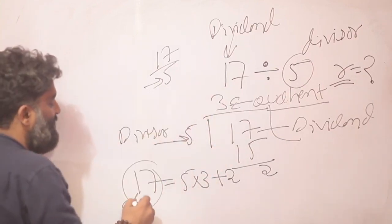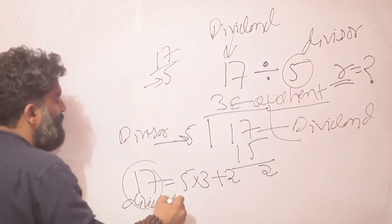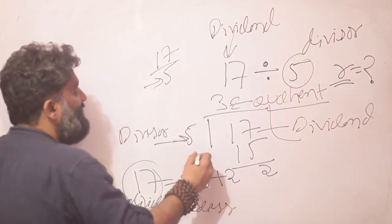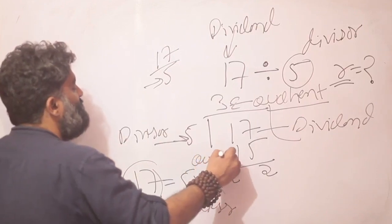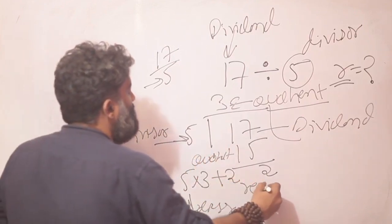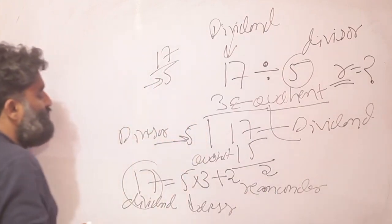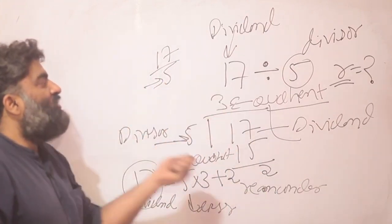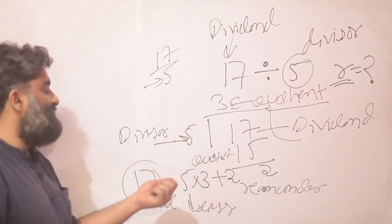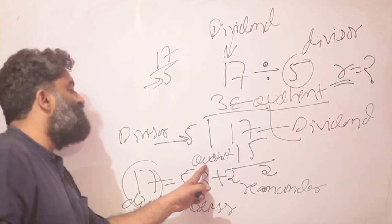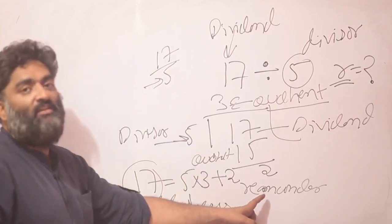5 was our divisor, 3 was our quotient, and 2 was our remainder. So my snapshot understanding of the division process would be that the dividend is equal to divisor into the quotient plus remainder, right?